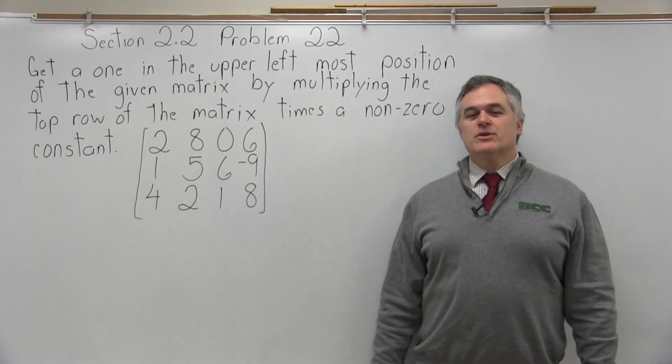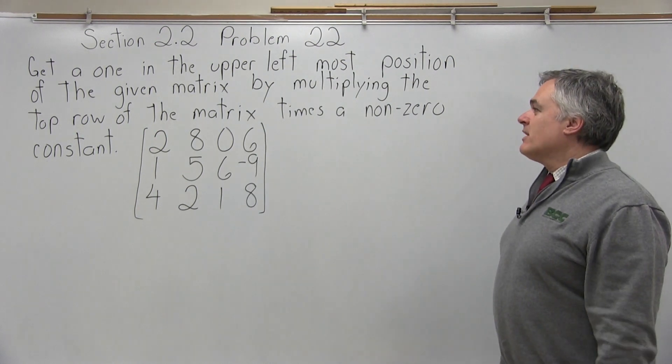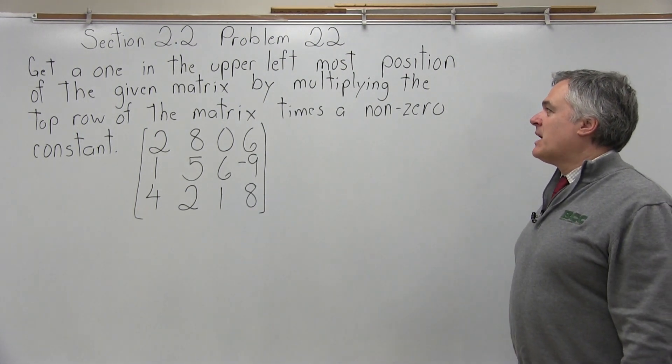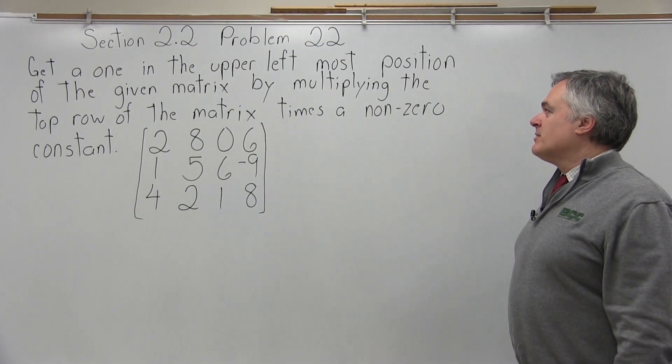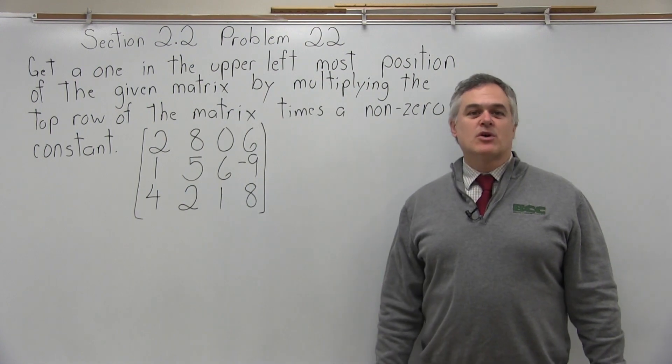This is Section 2.2, Problem 22. It says get a 1 in the upper leftmost position of the given matrix by multiplying the top row of the matrix times a non-zero constant.